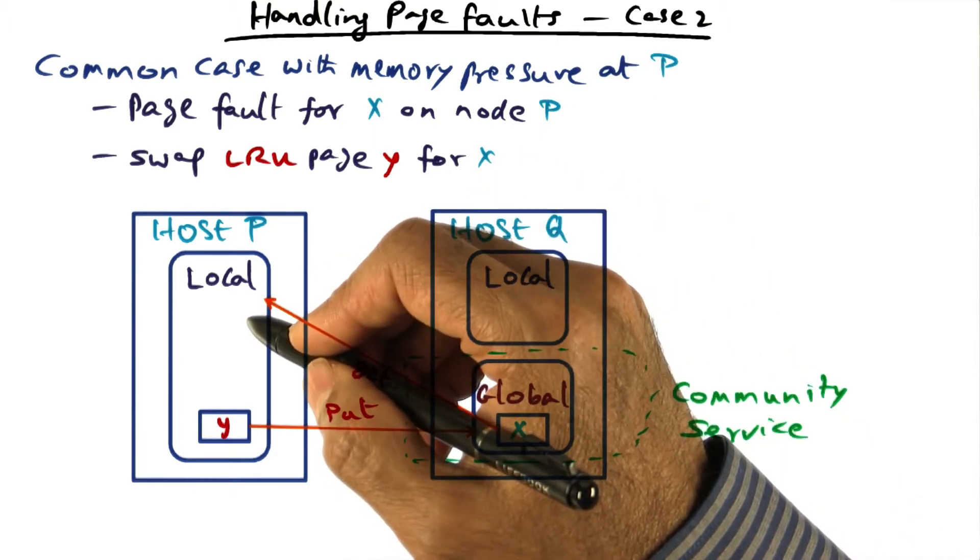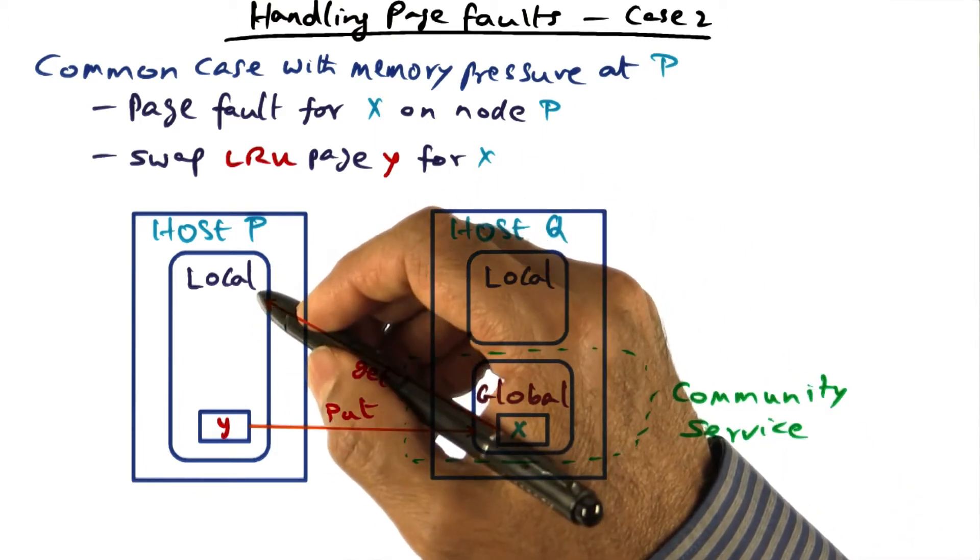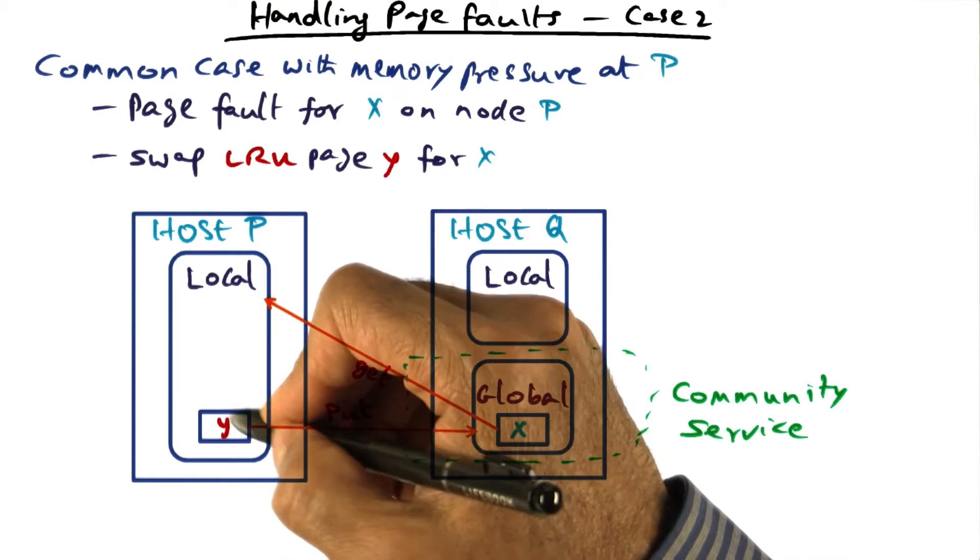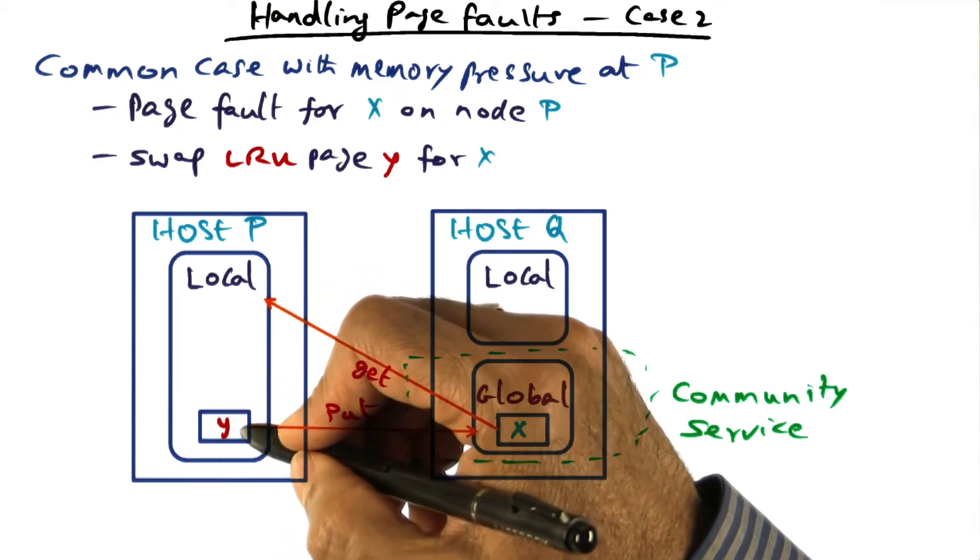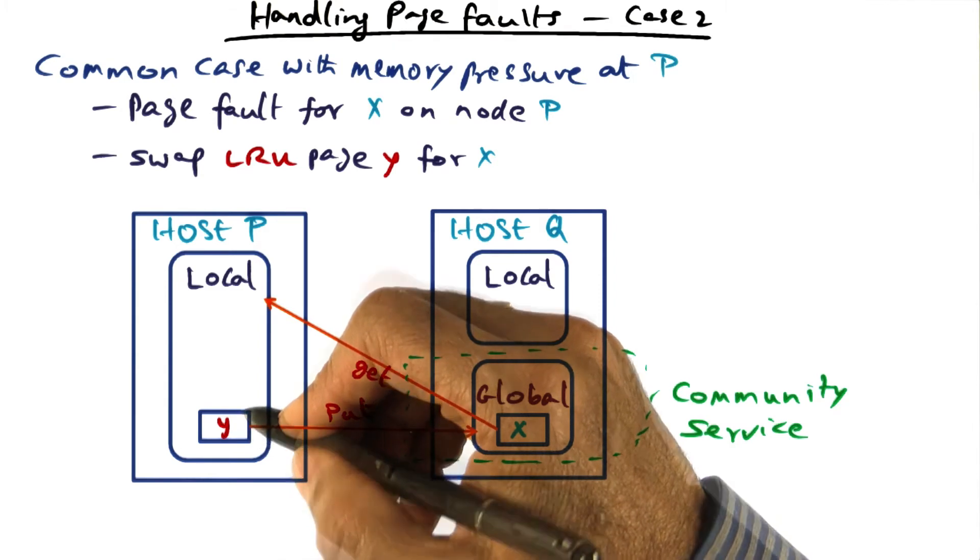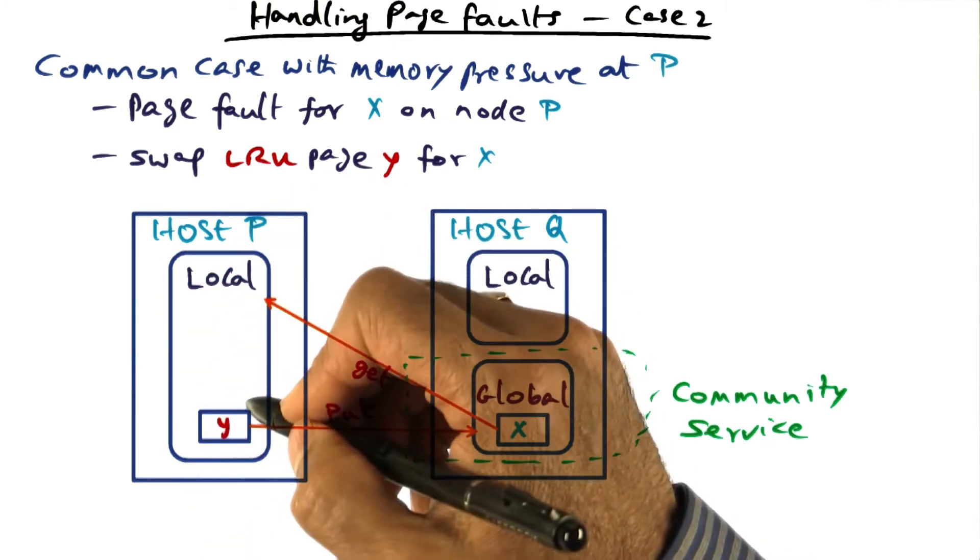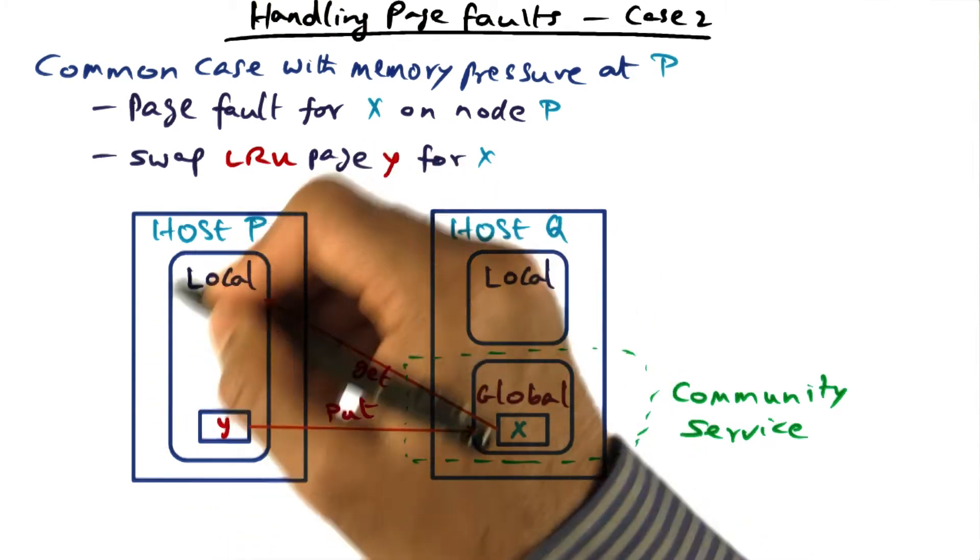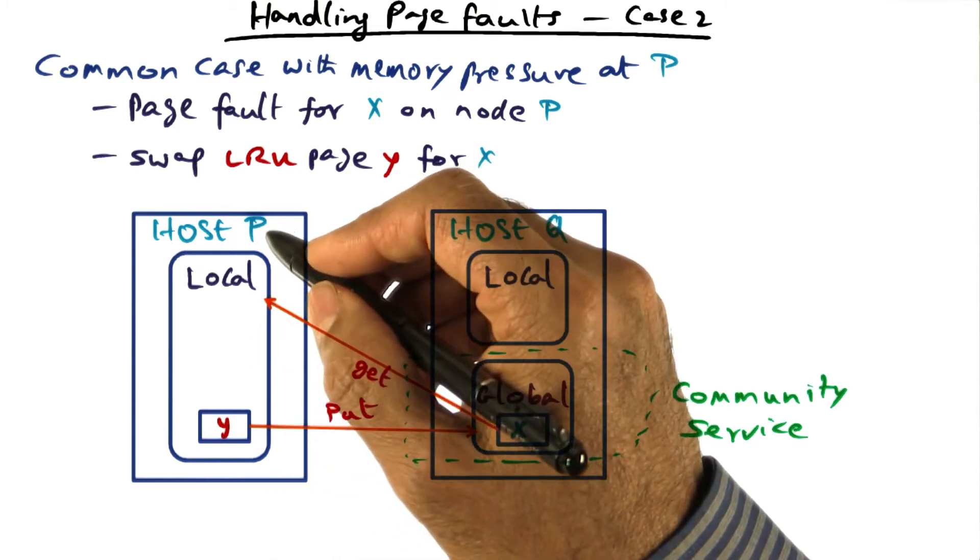So we're going to do exactly similar to what we did in the previous case, with the only difference that the candidate being chosen as the victim, or the replacement candidate, which is called the victim in the management of virtual memory systems, is coming from the local part of host P itself.